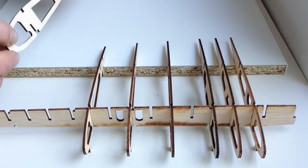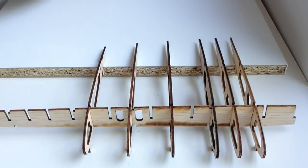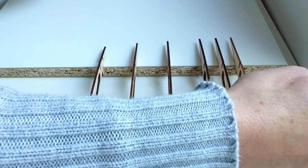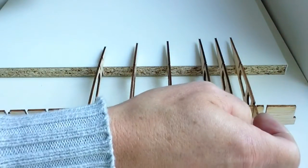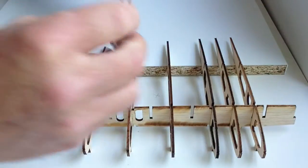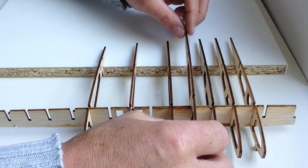Now take rib 13 that you marked up earlier and we are going to put that on the 6th notch from the end. So count along 1, 2, 3, 4, 5, 6 and this one will sit in here.